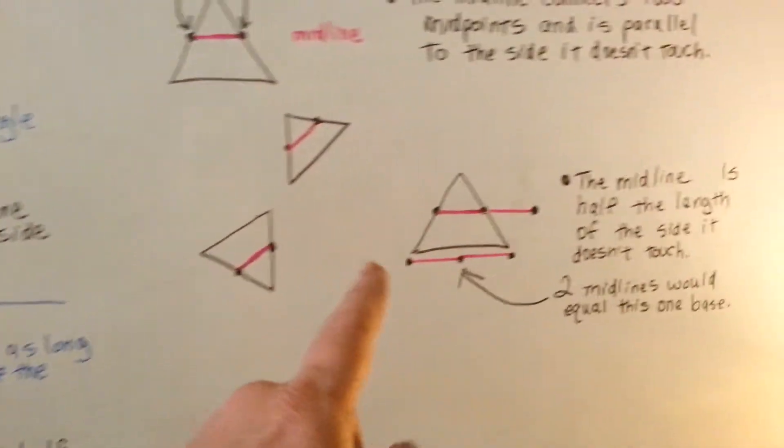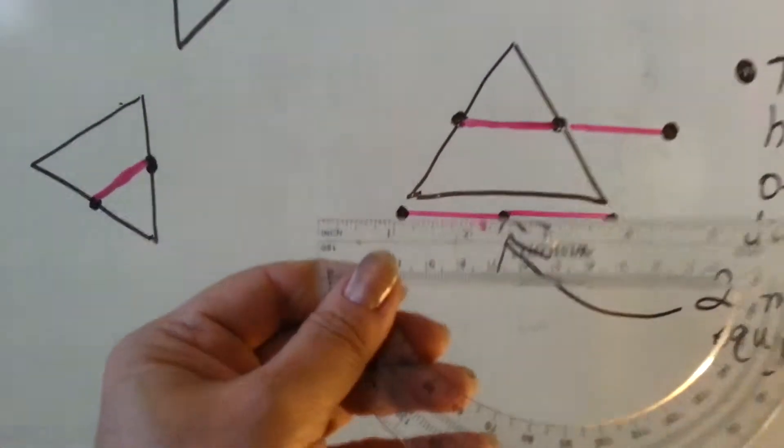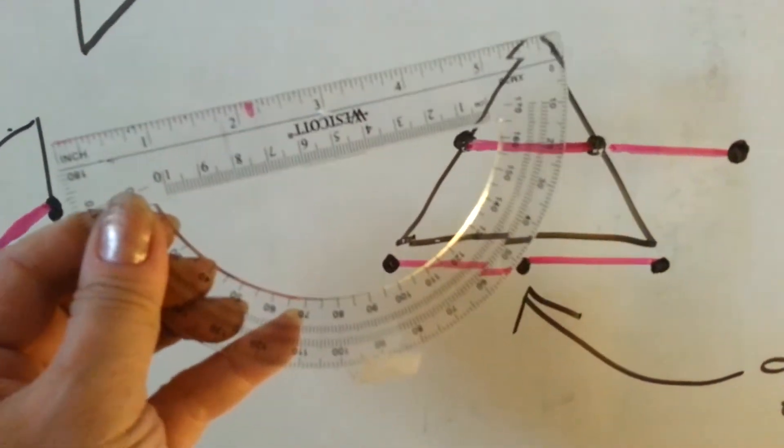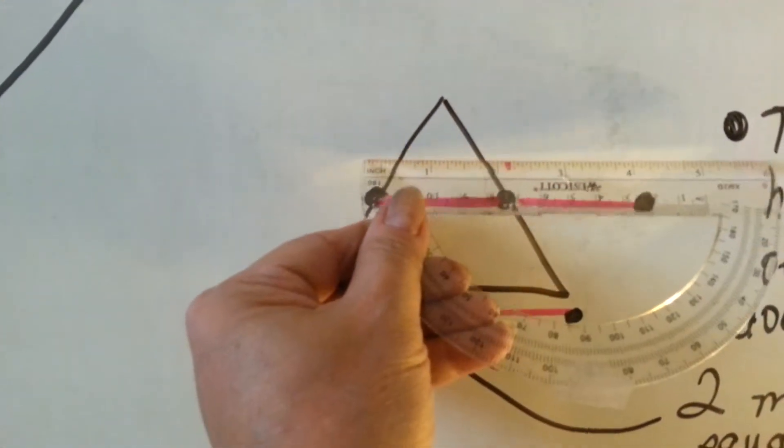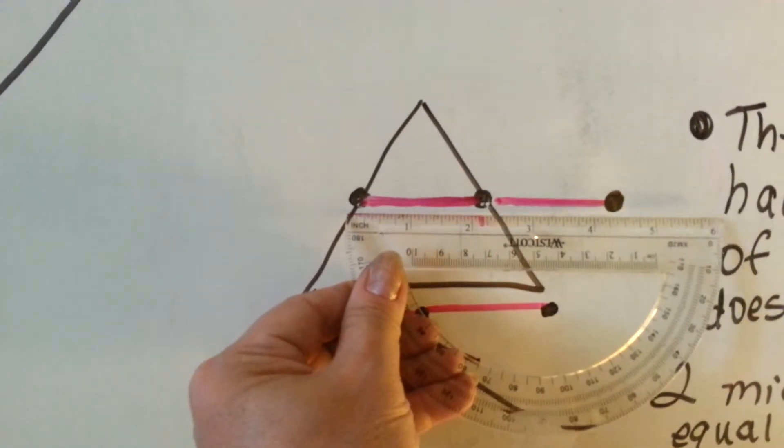Like I was saying before, if you actually take this midline right here, okay, and we measure it. See? See my pink mark on my protractor? If we go like this and we line it up, you can see that that's how long it is.